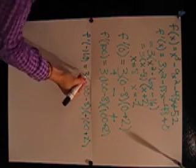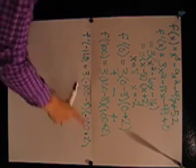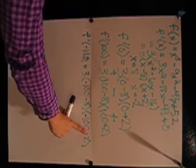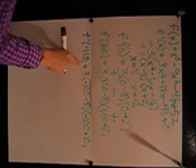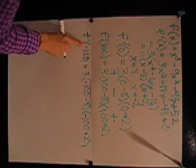3 is positive, this is negative, and this is negative. When multiplied, f prime negative 100 is positive. This means that the function is increasing from negative 100 to negative 2.